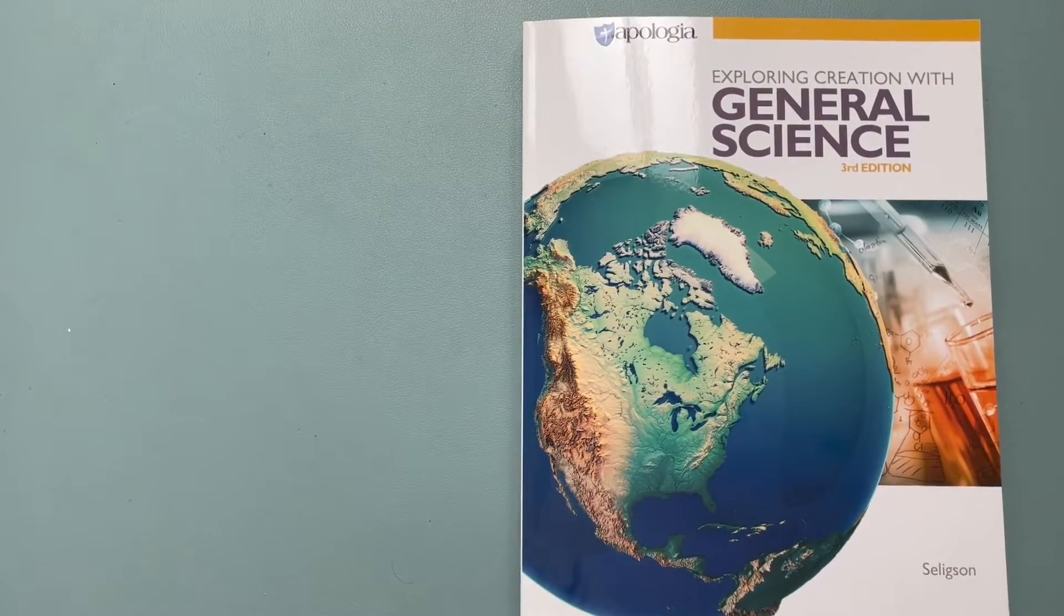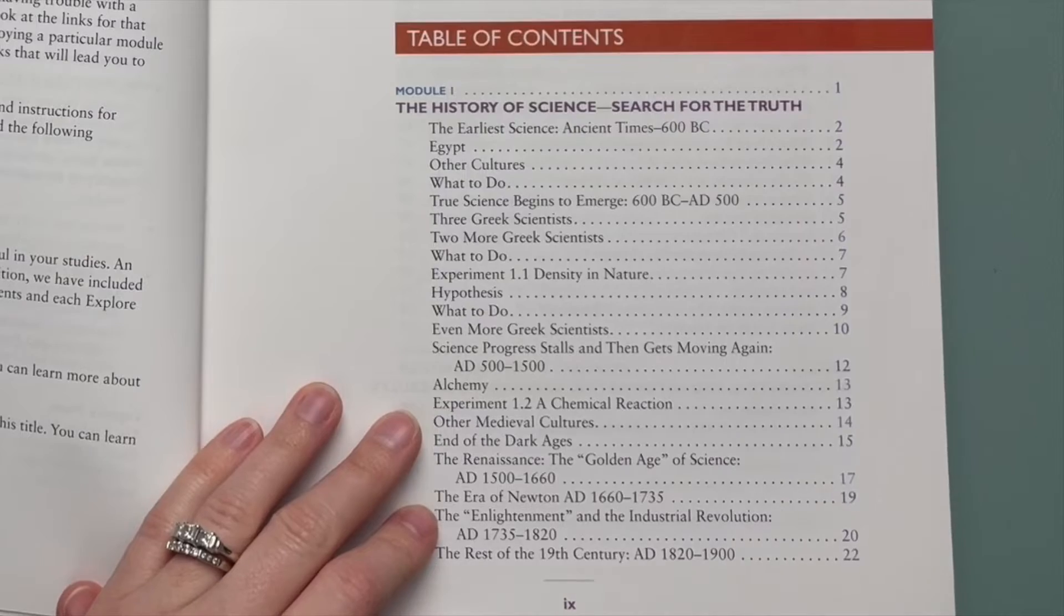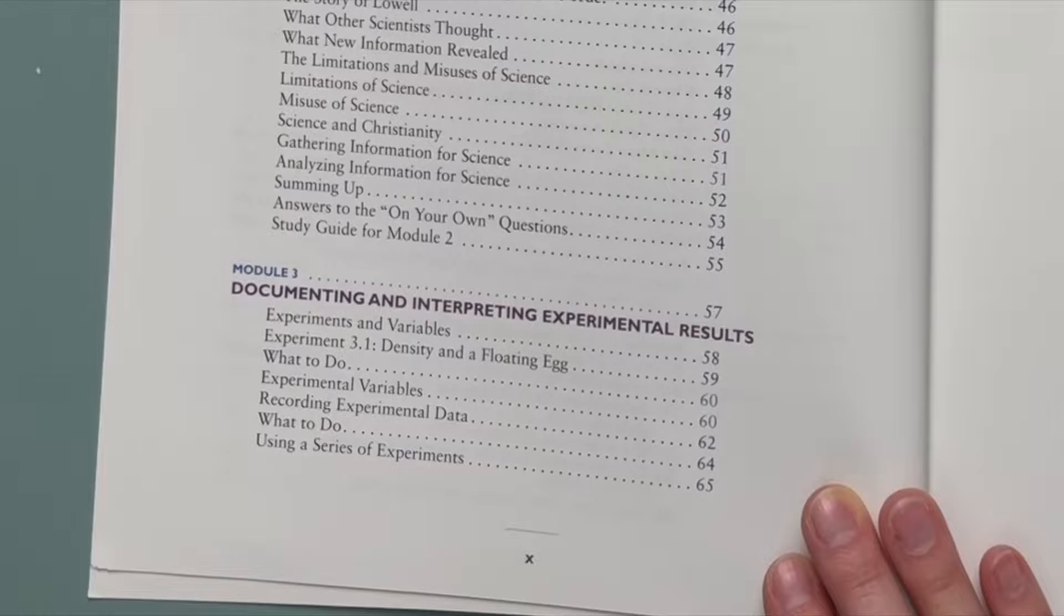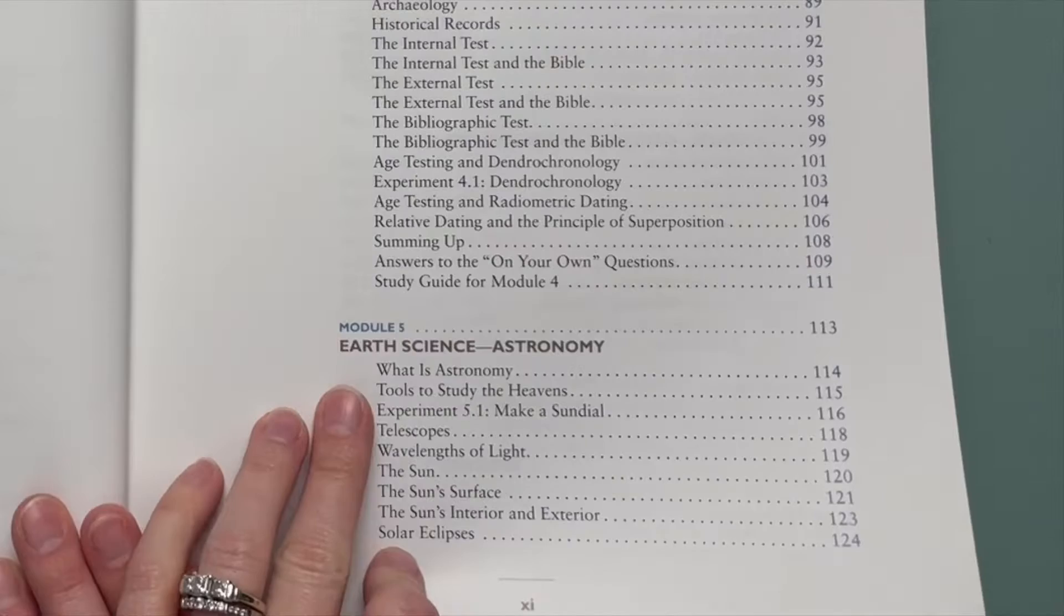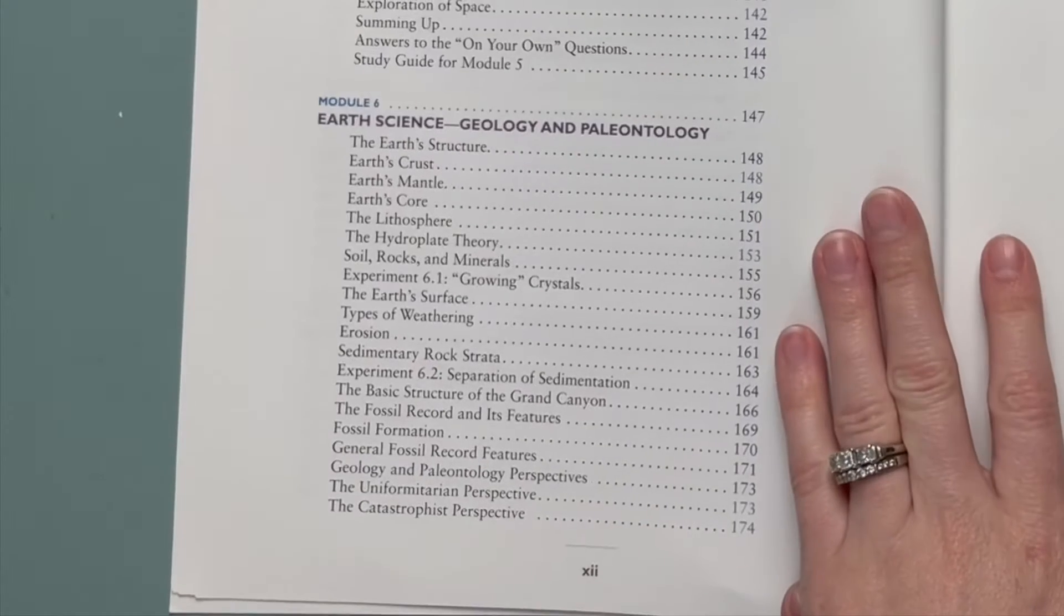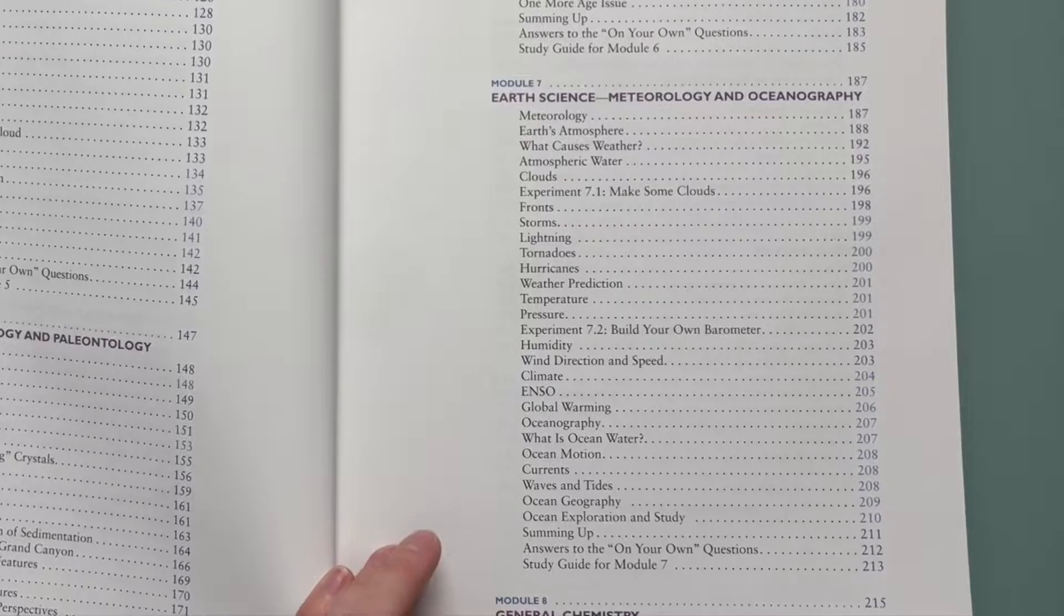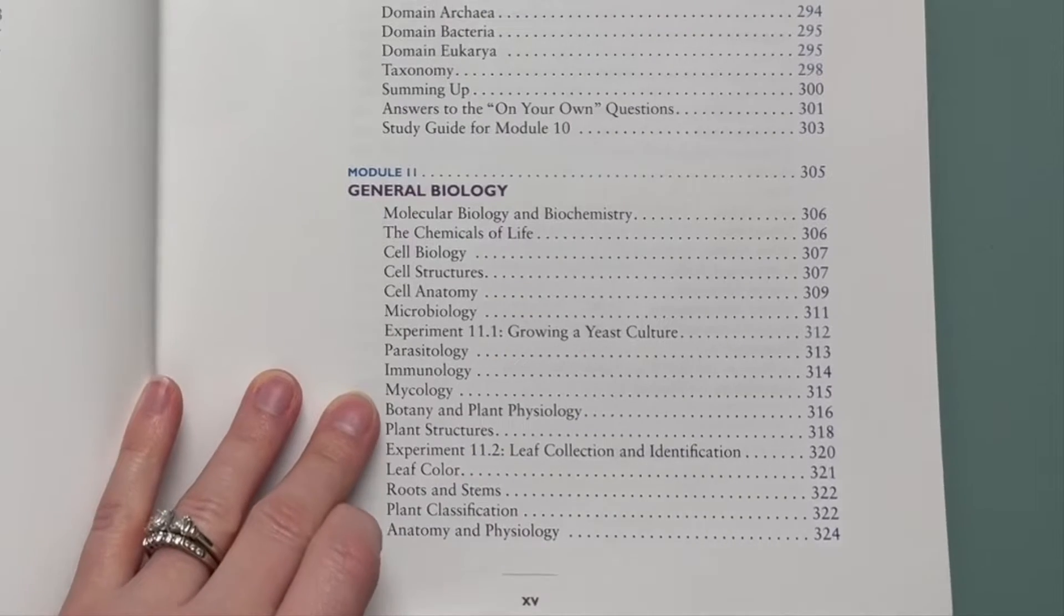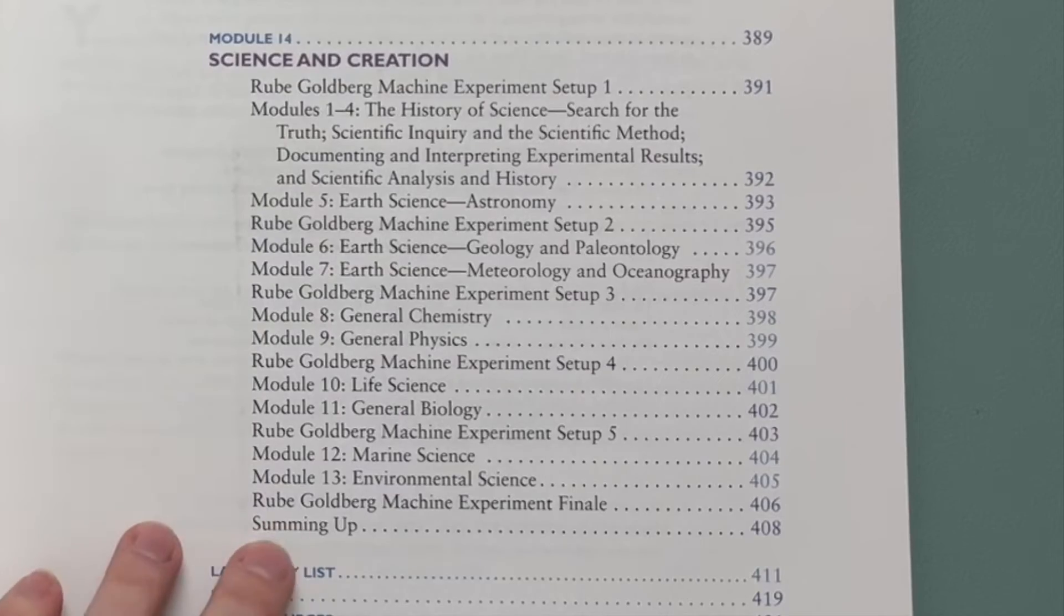But let's go ahead and dive inside these books and see what you think. First book we're going to go through is the actual textbook. It does have a total of 14 modules. The first one is on the history of science, search for the truth. Second is scientific inquiry and the scientific method. Three is documenting and interpreting experimental results. Four is scientific analysis and history. Five is earth science, astronomy. Six is earth science, geology and paleontology. Seven is earth science, meteorology and oceanography. Eight is general chemistry. Nine is general physics. Ten is life science. Eleven is general biology. Twelve is marine science. Thirteen is environmental science and fourteen is science and creation.